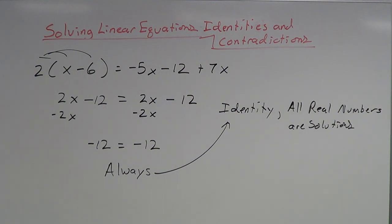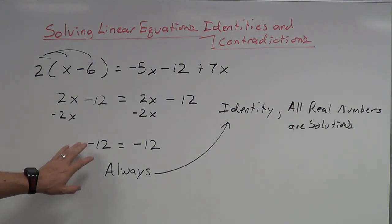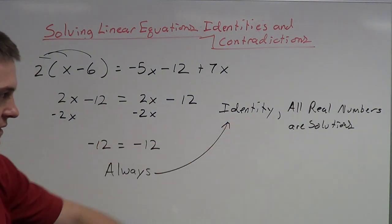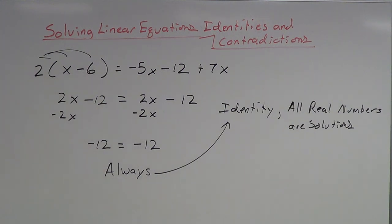So that's how you find identities and how you find contradictions. It basically comes down to what you see at the very end. At the very end, if it's always true, then it's an identity. If it was never true — like our first example — then it's a contradiction.